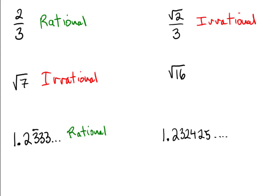Below, radical 16. That one is meant to be a little tricky. This one is actually rational. Even though it's a radical, because the square root of 16 is actually equal to the number 4. And 4 is a ratio of integers, right? Because 4 is 4 over 1.